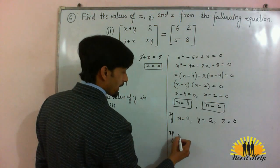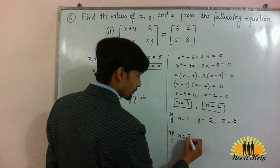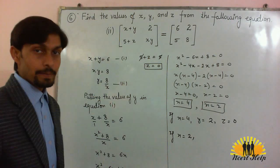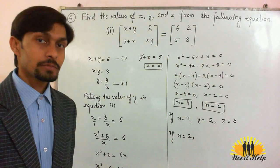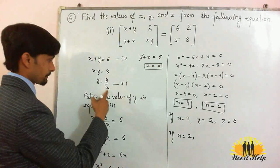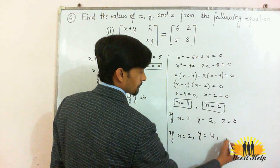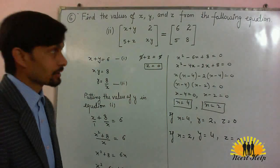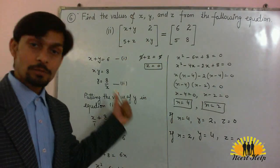Now if x is equal to 2, what will be the value of y? 8 divided by 2, it will become 4. So these are the set of values of x, y, z for this problem.